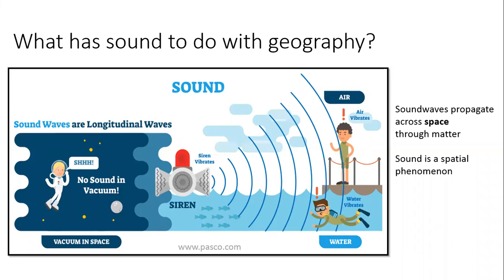We can think of air as something similar to a jelly block. If you hit the jelly block on one side, you will see the movement propagating through it and reaching the other side. Sound also propagates through media other than air, like water for example. But without air, without matter — in outer space or in a vacuum — there is no sound. So sound needs both a medium and space in order to exist. Sound is, as I said, a spatial phenomenon.